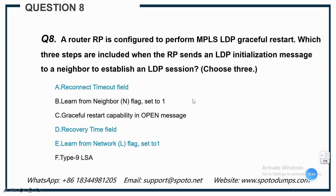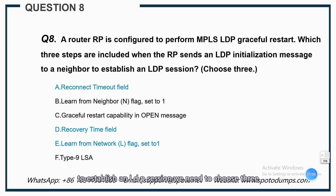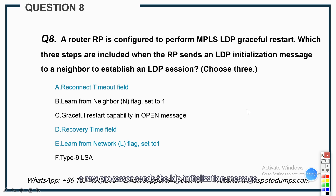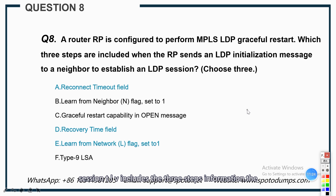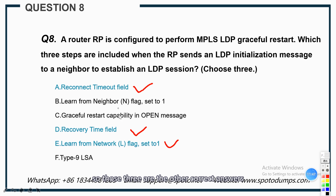Question 8: A router RP is configured to perform MPLS LDP graceful restart. Which three steps are included when the RP sends an LDP initialization message to a neighbor to establish an LDP session? The fault-tolerant session TLV includes three pieces of information: a reconnect timeout field, a recovery timeout field, and a learn-from-network flag set to 1. Those three are the correct answers — A, D, E.